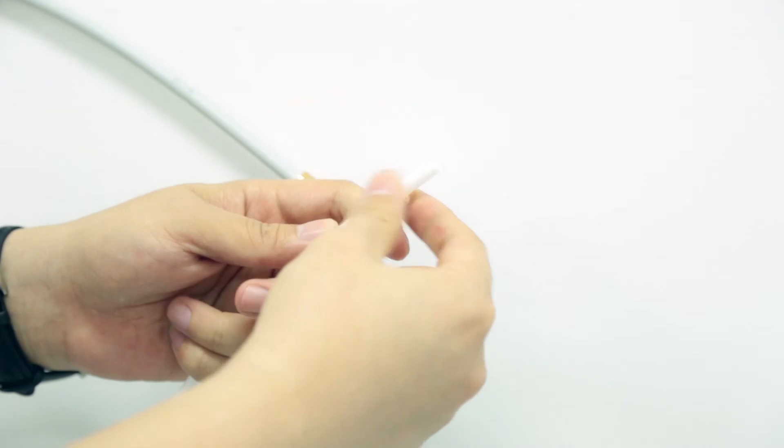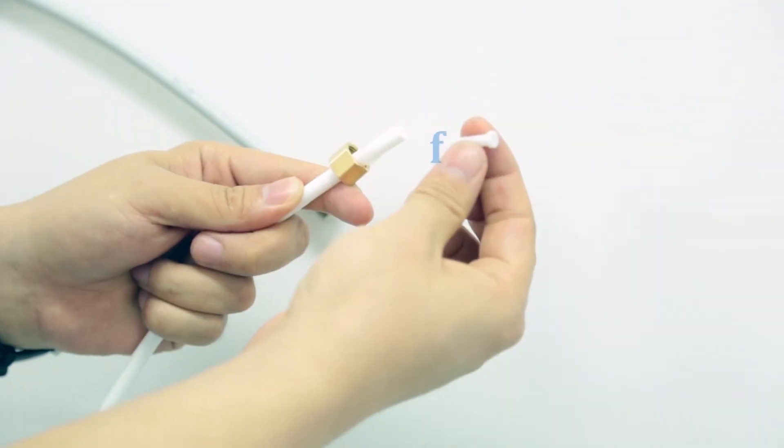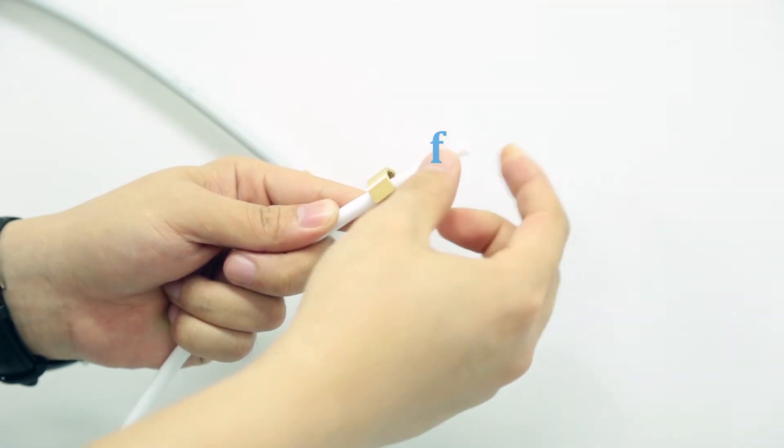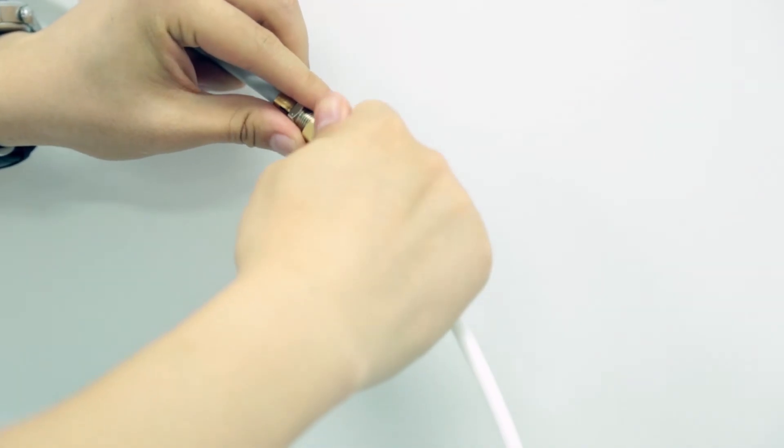Cut out PE tube of proper length according to position of T fitting and refrigerator joint F. Install the spare parts on the other end as the picture shows.